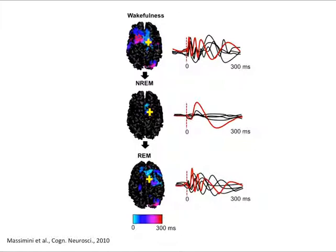Overall, these results suggest that perturbing the cortex directly and recording its immediate reaction represents an interesting way to assess the brain's capacity for consciousness, at least on a coarse level.